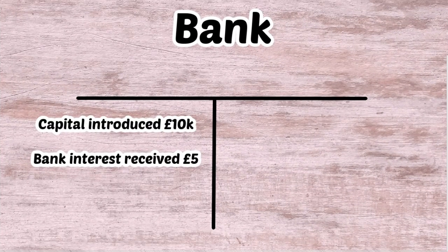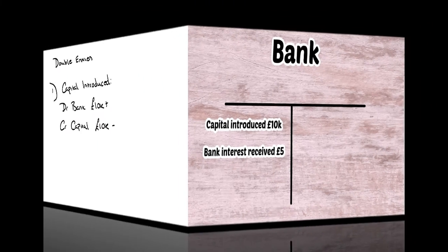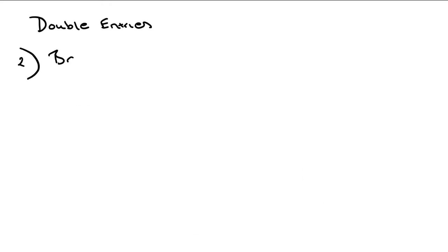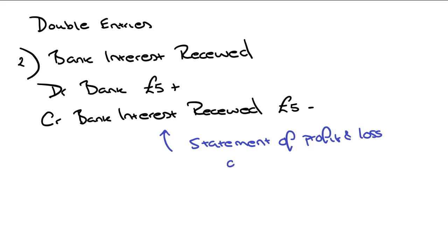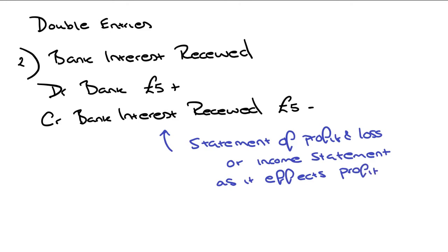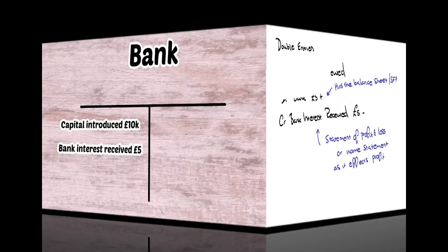Next we have bank interest received of £5 — interest earned on the £10,000 balance. The double entries are: debit bank £5 and credit bank interest received in the statement of profit and loss by £5, because that's income received. We're increasing profit in the income statement and increasing the bank on the balance sheet, so this again appears on the left hand side of the bank T account.